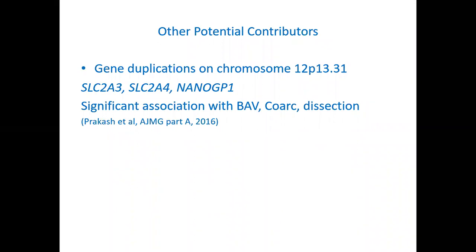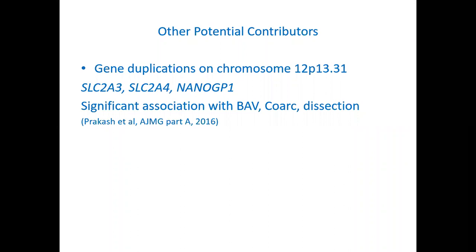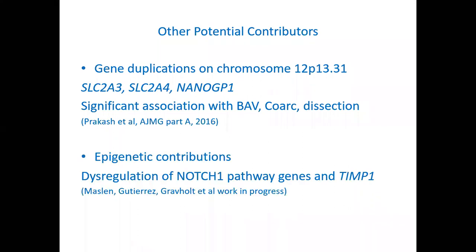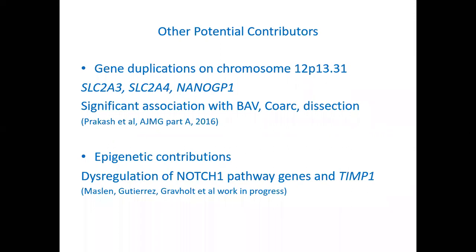There are other potential contributions. Siddharth Prakash and collaborators showed that gene duplications due to copy number variants on chromosome 12 — in particular the genes SLC2A3, SLC2A4, and nanoGP1 — were significantly associated with bicuspid aortic valve, coarctation, and dissection. This copy number variant is also a considerable risk factor for these disorders in Turner syndrome. Additionally, we are doing studies on epigenetic contributions, with preliminary data showing that dysregulation of Notch1 pathway genes and TMP1 may represent another mechanism contributing to what is proving to be a genetically heterogeneous occurrence of bicuspid aortic valve and aortopathy in Turner syndrome.